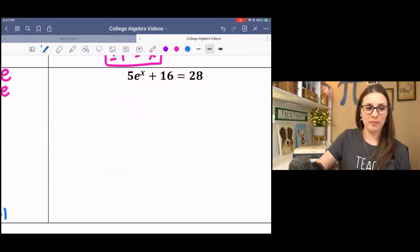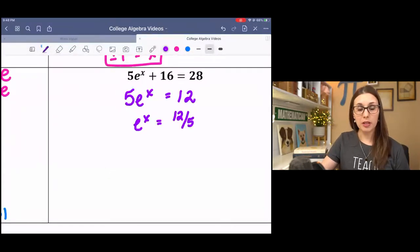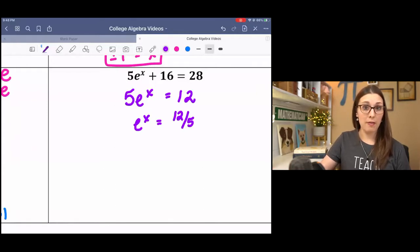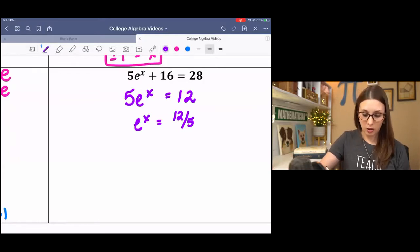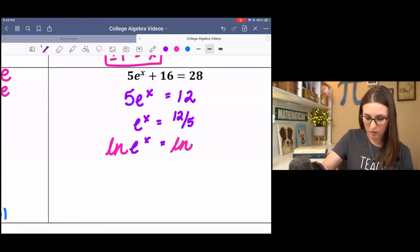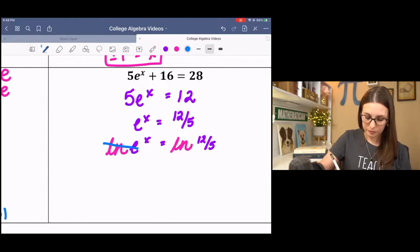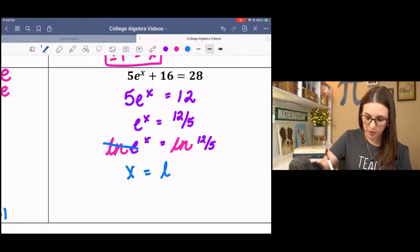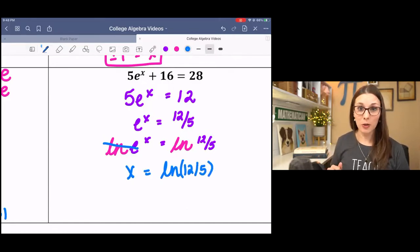Hopefully, you were able to get to this point. You would have to subtract 16 and then divide by 5. And that isolates the E component. Then to undo E, we're going to take the natural log of both sides. And on the left side, natural log E equals 1. And X drops down. And then that's all we have to type in. Natural log of 12 over 5. So simple. So clean. That's what I like about math. It always works out so nicely.